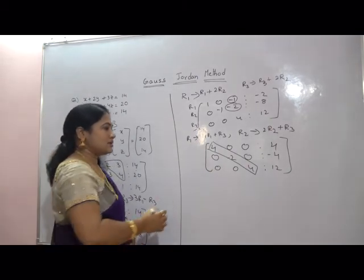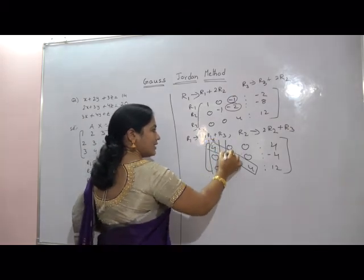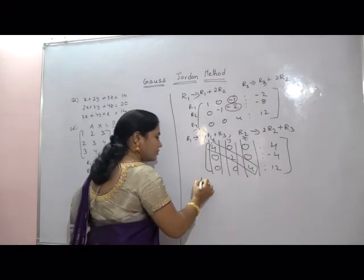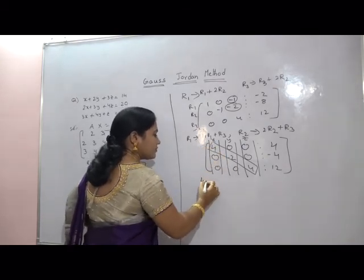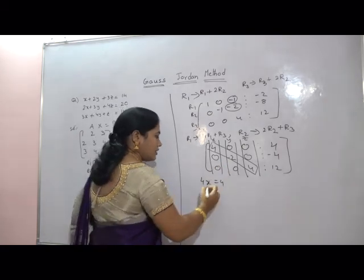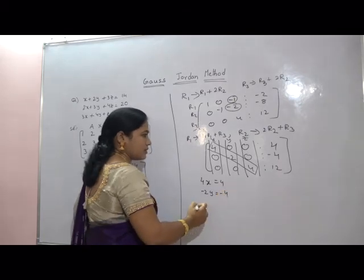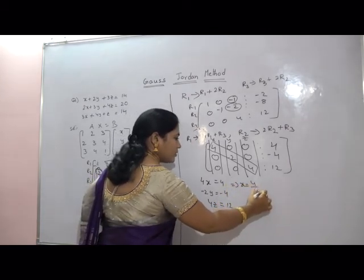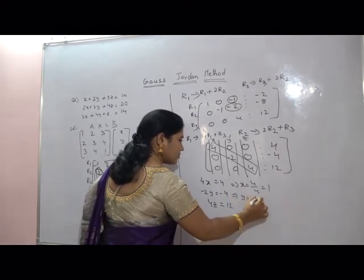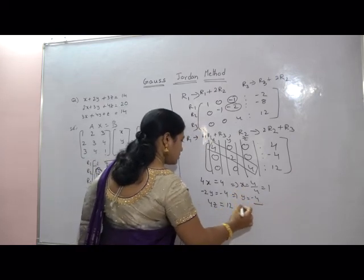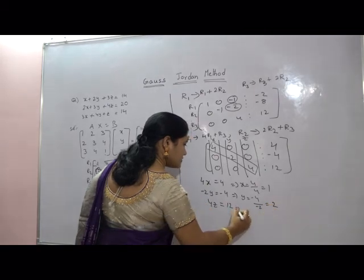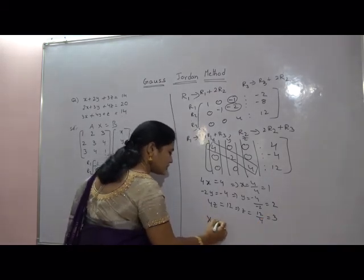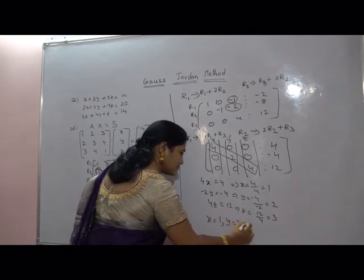The system is now in diagonal matrix form. Writing the equations: 4x = 4, −2y = −4, and 4z = 12. Therefore x = 4/4 = 1, y = −4/−2 = 2, and z = 12/4 = 3. The solution is x = 1, y = 2, and z = 3.